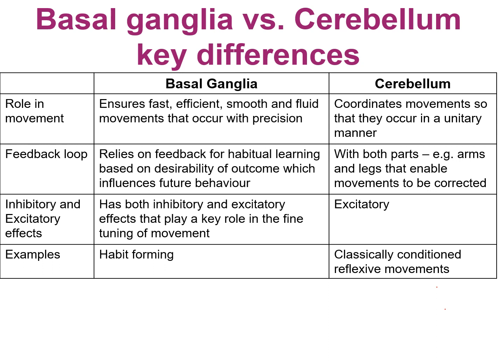I want to cover three points of difference that I'll illustrate with some practical examples. First of all, the role in movement: the cerebellum has a broader role in terms of gross movements, coordinating movement so that it occurs in a unitary manner, such as running, the way you sit in a car, your body position when you're driving, sitting, etc. Your basal ganglia is involved more in the finer motor movements so that they're occurring with fluidity and precision.